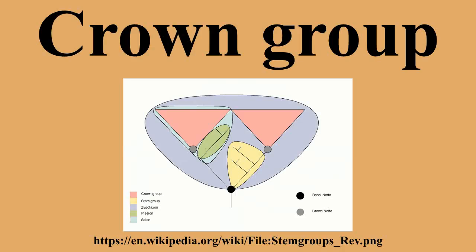It is not necessary for a species to have living descendants in order for it to be included in the crown group. Extinct side branches on the family tree that are descended from the most recent common ancestor of living members will still be part of a crown group. For example, extinct side branches like the dodo or great auk, still descended from the most recent common ancestor of all living birds, fall within the bird crown group.